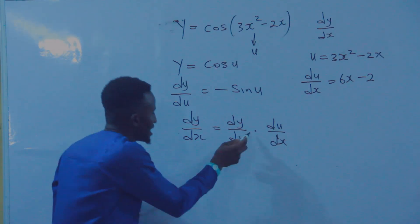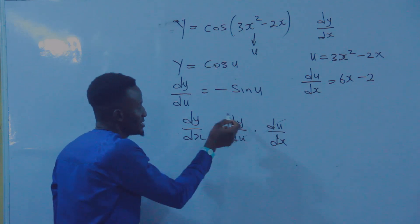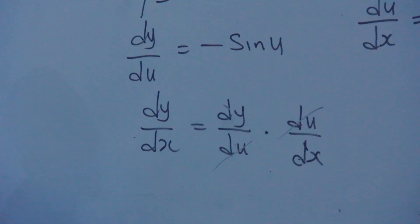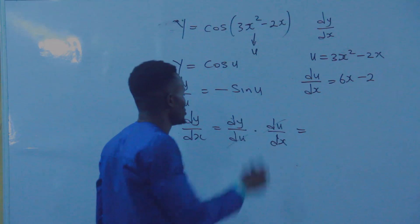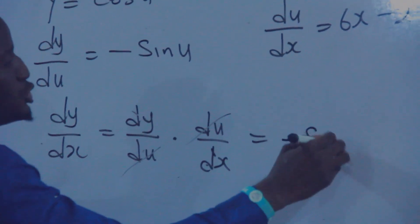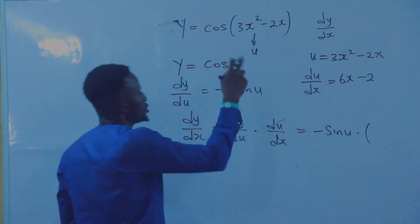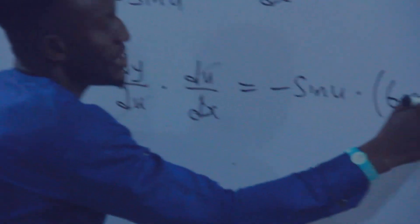If you observe this, normally I can say the U cancels the U, and it will remain dY/dX, which makes the equation correct. So what's your dY/dU? dY/dU is minus sine U, then multiply by your dU/dX, which is 6X minus 2.